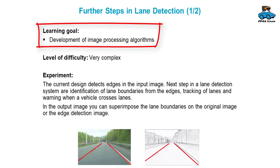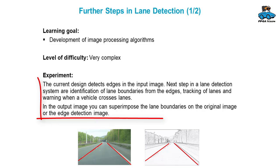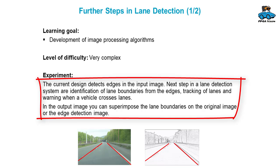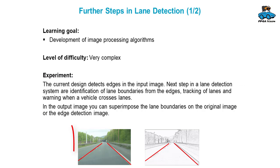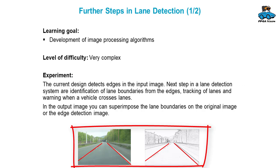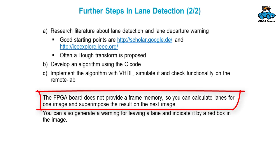Finally, there is one exercise that is really complex — it will take several weeks or maybe a complete semester, but it's an interesting exercise. With the lane detection we have up to this point only detected the edges and shown them on screen. But you can do more and really find out where the lanes are in the image — combining individual pixel information to determine the left and right lane boundary, then superimposing this information on the image. Since we don't have a frame memory, you make the estimation on one image and then superimpose the lines on the next image.